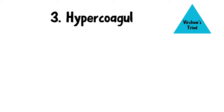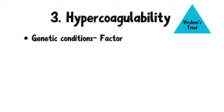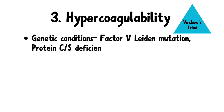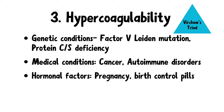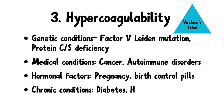The third factor is hypercoagulability. Hypercoagulable states can enhance the likelihood of thrombus formation even in the presence of normal blood flow. For example, genetic conditions like Factor V Leiden mutation, protein C and S deficiency, medical conditions like cancer and autoimmune disorders, and hormonal factors like pregnancy, birth control pills, and chronic conditions like diabetes and hypertension can all lead to a hypercoagulable state.